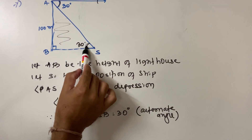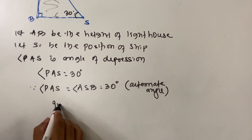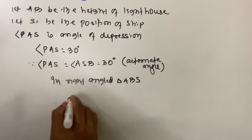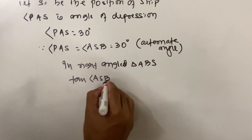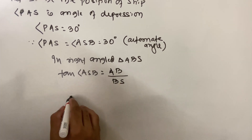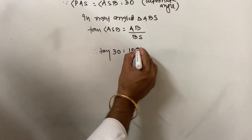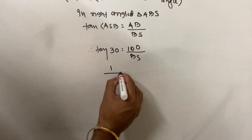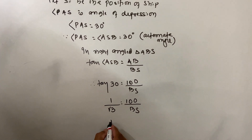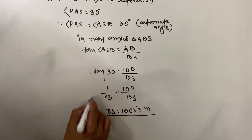In right angle triangle ABS, tan(angle ASB) = opposite side AB upon adjacent side BS. So tan 30 = 100 upon BS. Tan 30 is 1 upon root 3. So 1 upon root 3 = 100 upon BS. Do your cross multiplication and BS = 100 root 3 meters.